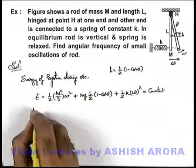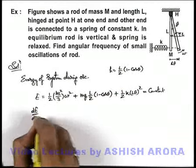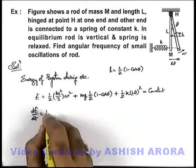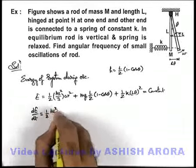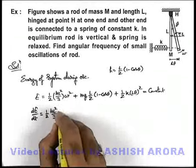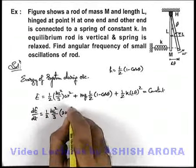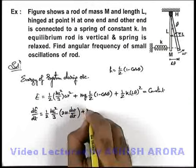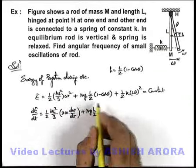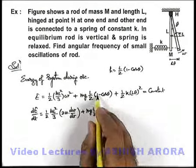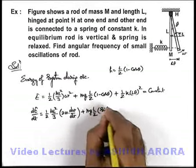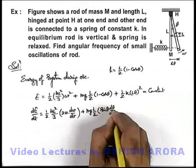So now we differentiate this energy with respect to time, see what we'll be getting. Here it'll be ½ML²/3, and differentiation of ω² will be 2ω dω/dt. Plus it'll be mgL/2, differentiation of 1 obviously is zero, minus cos θ its differentiation will be sin θ dθ/dt.